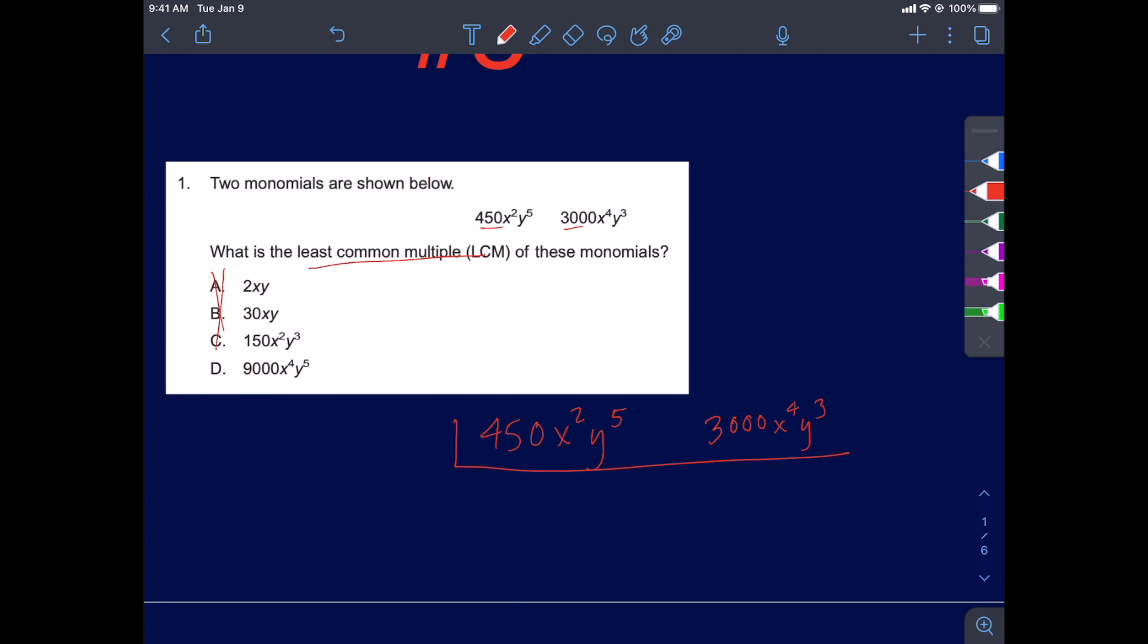The goal here is to pick any number that can go into these two terms. I'm going to start with the coefficients. Maybe you didn't see a lot of options, but you saw, okay, they're both divisible by 10. So 10 goes into 450, 45 times. We bring down the x squared y to the 5th. It would go into 3,000, 300 times.